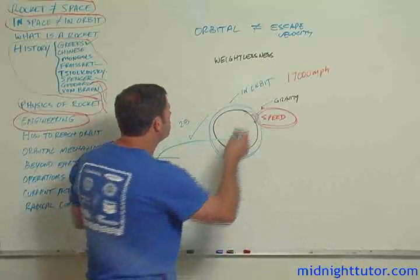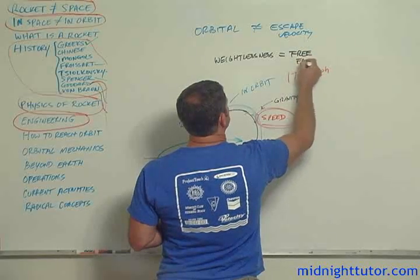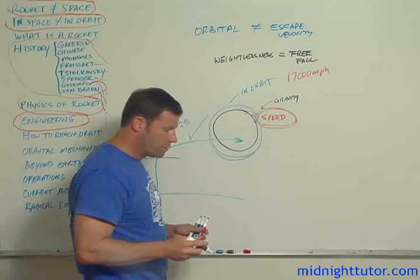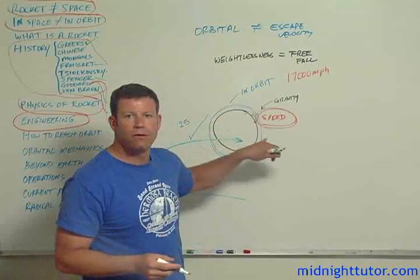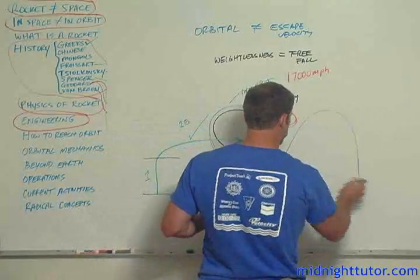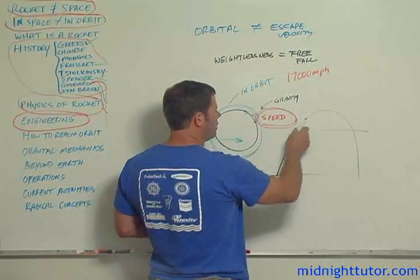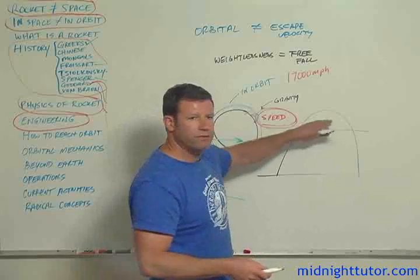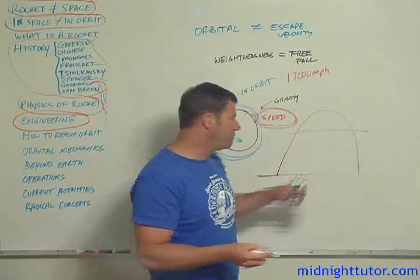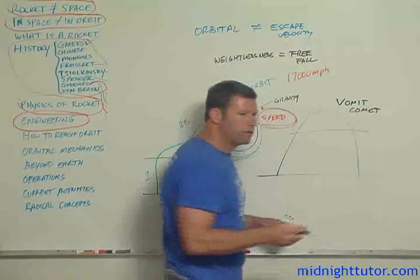So weightlessness is really just being in a free fall. In this case, it's a free fall that never intersects the Earth. In the case of a ballistic trajectory, there's a certain time here when the thing is reaching the top where you're essentially in a free fall inside the vehicle.